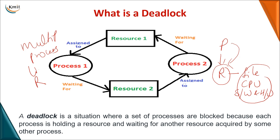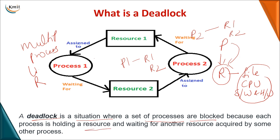In this scenario, process one is waiting for resource two, and resource one is assigned to process one. Process two is assigned resource two and is waiting for resource one. If process one wants to complete execution, it needs R1 and R2; similarly, process two needs R1 and R2. Each process is holding one resource and waiting for the other, so none of them can continue. This leads to a deadlock — a situation where a set of processes are blocked because they are holding a resource and waiting for another resource acquired by some other process.